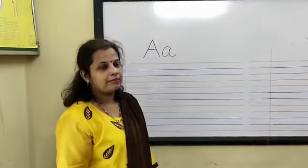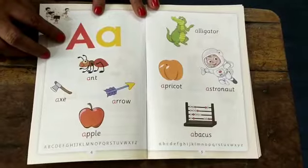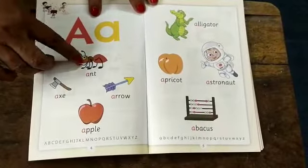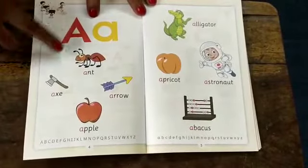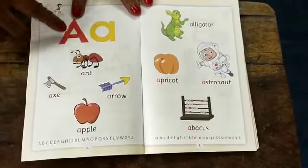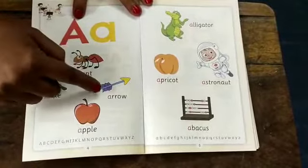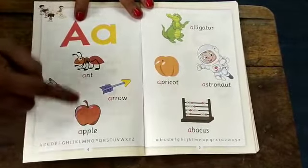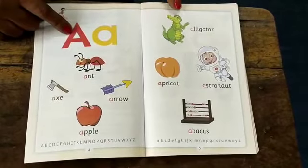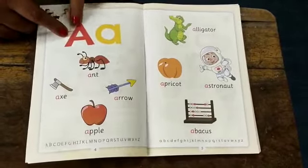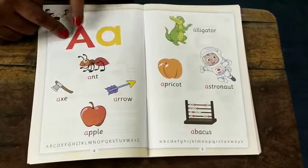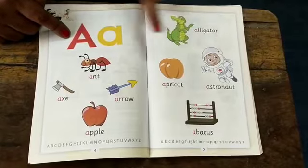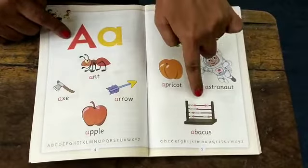Come first revise capital A. A for Ant. A for Axe. A for Arrow. A for Apple. A for Alligator. A for Apricot. A for Astronaut. A for Abacus.